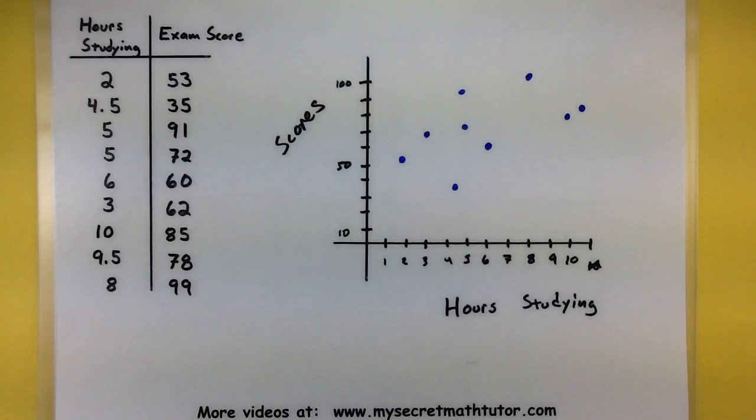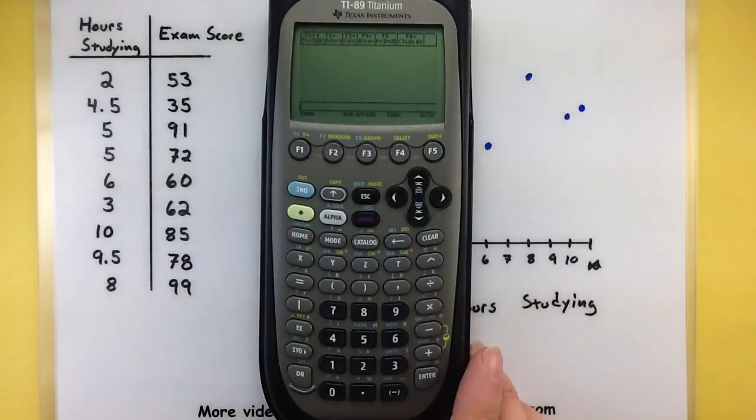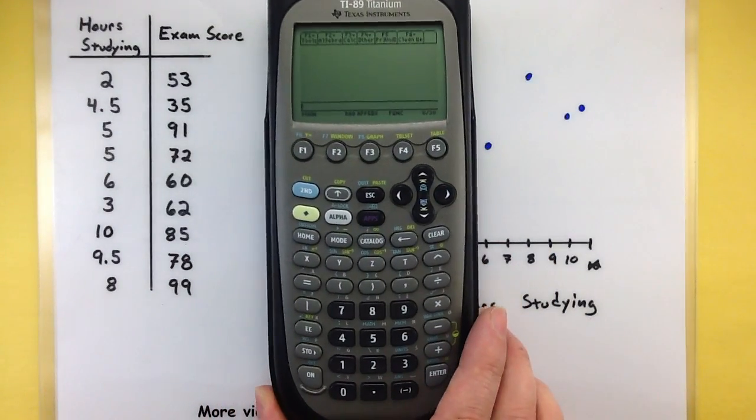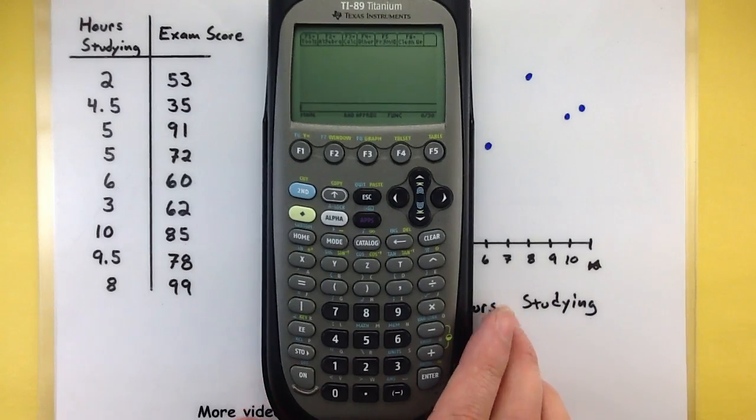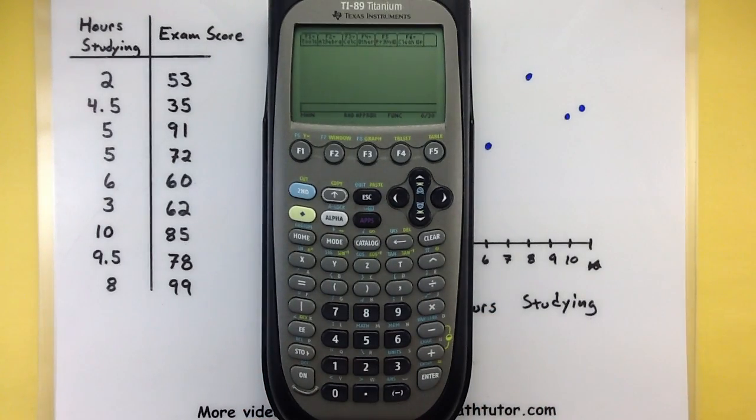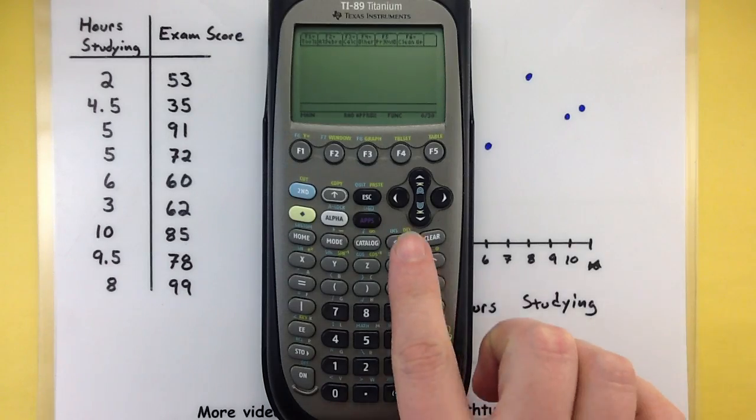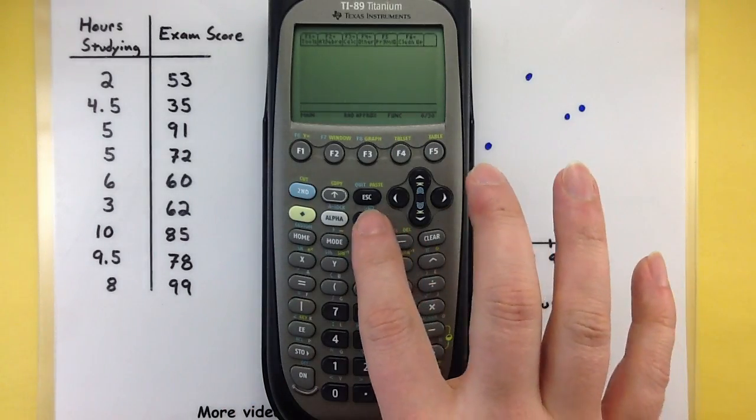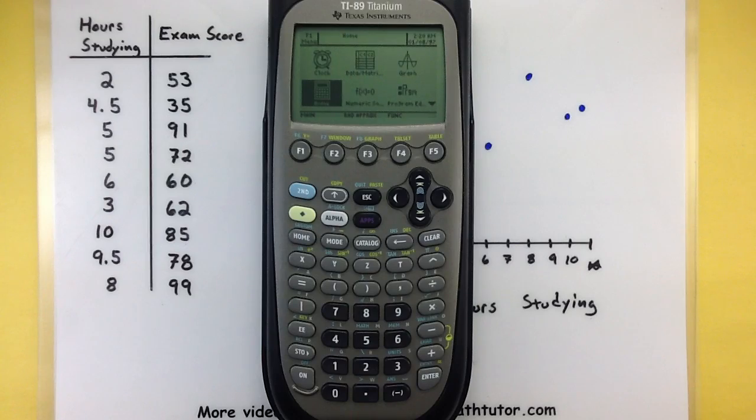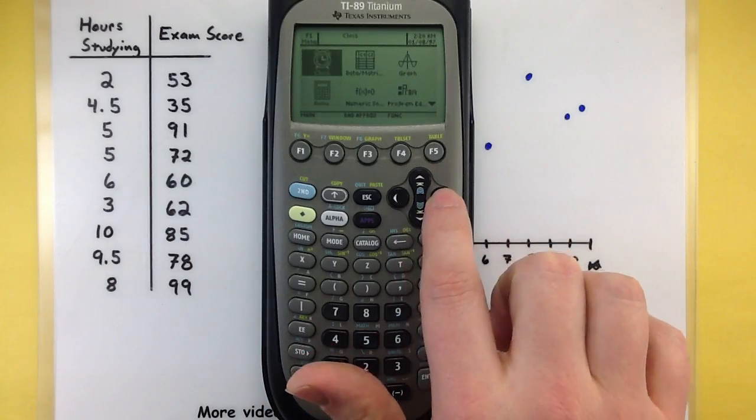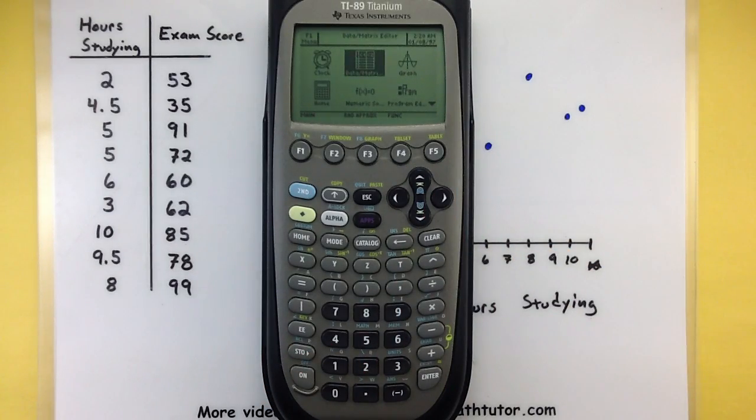So let's go ahead and grab our calculators and see if we can take all of this data and actually put it into the calculator. Very first thing we need to do is get to our data matrix editor. To do that you'll notice I'm on the home screen. Go ahead and go to your apps, look for the option that says data matrix editor, select it and go ahead and press enter.